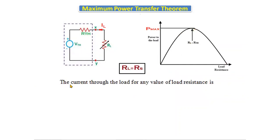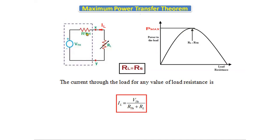The current through the load for any value of load resistance is given by applying Ohm's law: IL equals Vth divided by (Rth plus RL), since Rth and RL are both connected in series. This formula is used to find the load current for any value of load resistance.